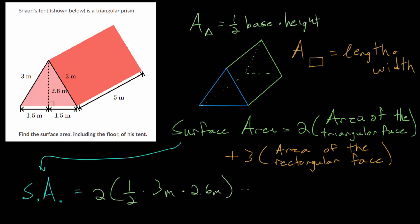And then from there, we're going to add the area of each of these rectangular faces. And it looks like this rectangle is a 5 meter by 3 meter rectangle. The one on the other side, so essentially this side of our tent, it's also a 3 by 5 rectangle.